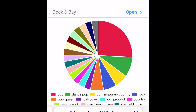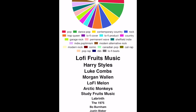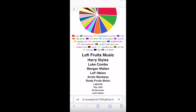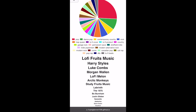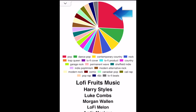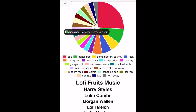Spotify pie will then create your pie chart with your most listened to music genres, and a list below with genres and artists. You can tap on a section of the pie chart to see what genre it is, along with names of the genre.